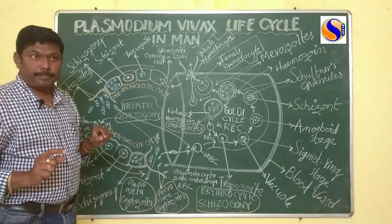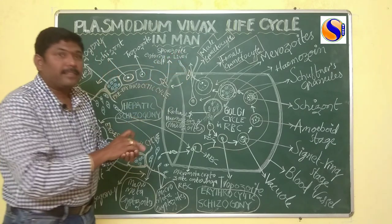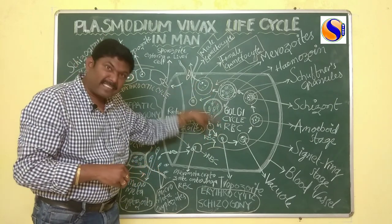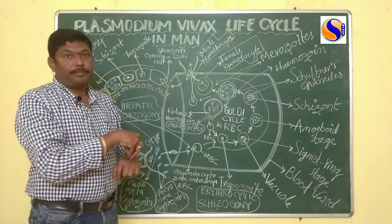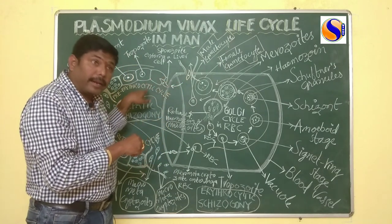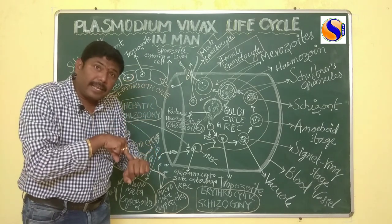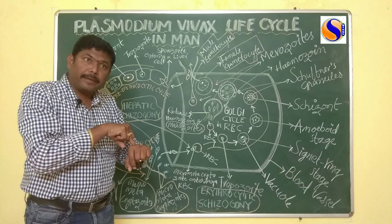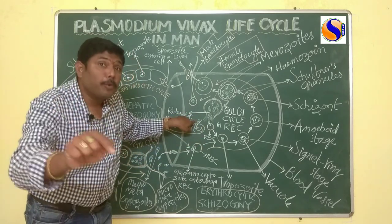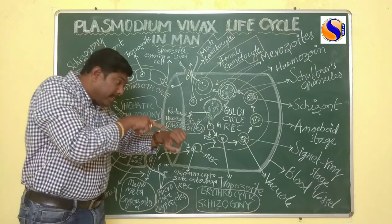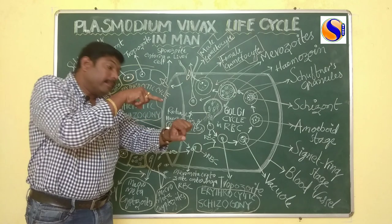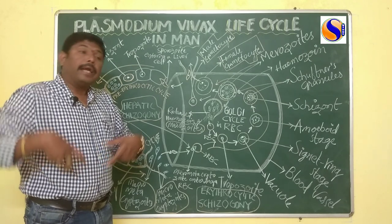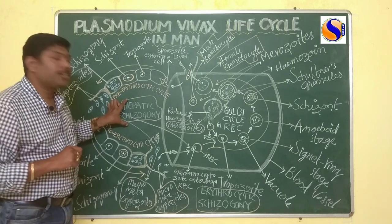According to these two scientists, within half an hour after the Plasmodium-infected mosquito bites a healthy person, nearly 2,000 sporozoites are released into the blood of man. These 2,000 sporozoites, through blood circulation, enter into the liver cell, where they complete Hepatic Schizogony.